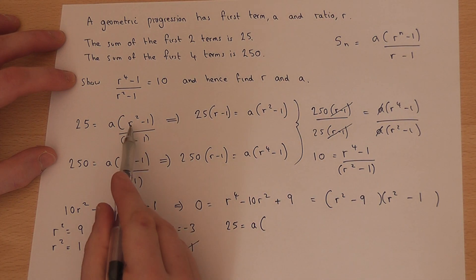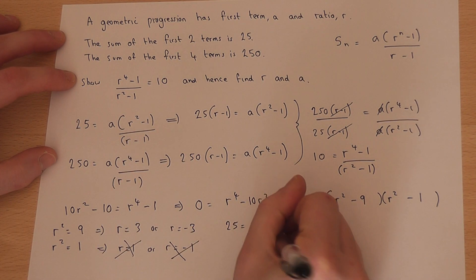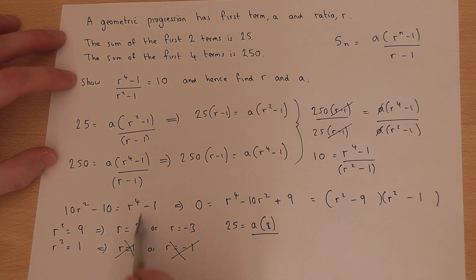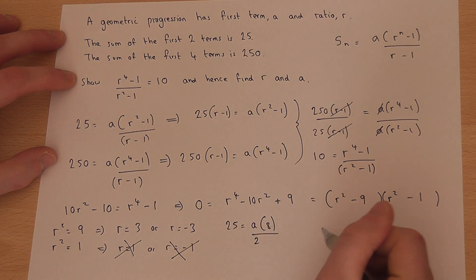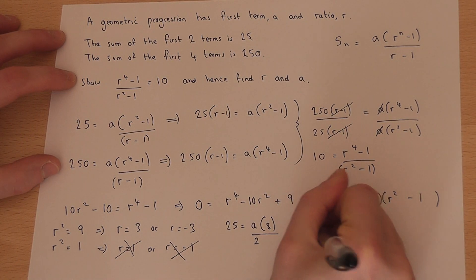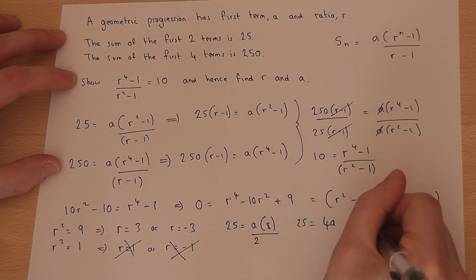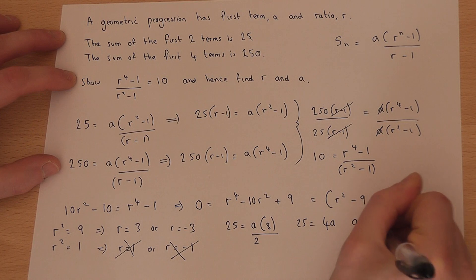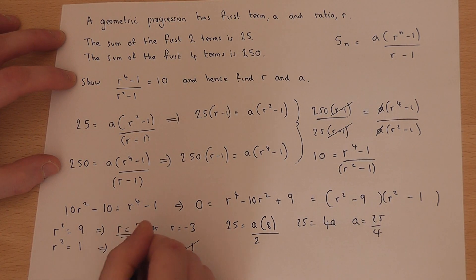then when r is 3, 25 = a(9 - 1)/(3 - 1), which is a(8)/2. So 25 equals 4a, so a equals 25/4. That's when r is 3.